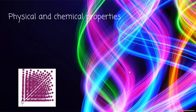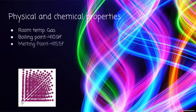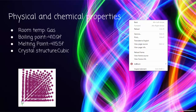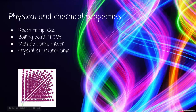Physical and chemical properties of NEON: At room temperature, NEON is just a gas. NEON's boiling point is negative 410.9 degrees Fahrenheit, and its melting point is negative 415 degrees Fahrenheit. The structure of NEON looks like a bunch of cubes put together, so it's not a very smooth element. Its density is 0.901 grams.